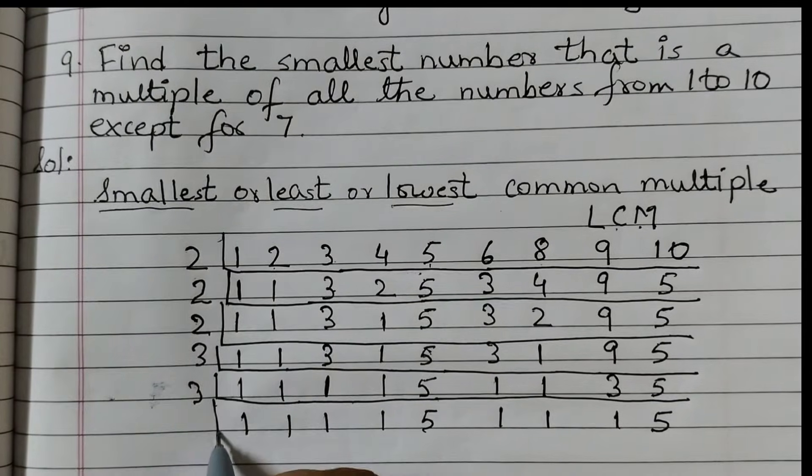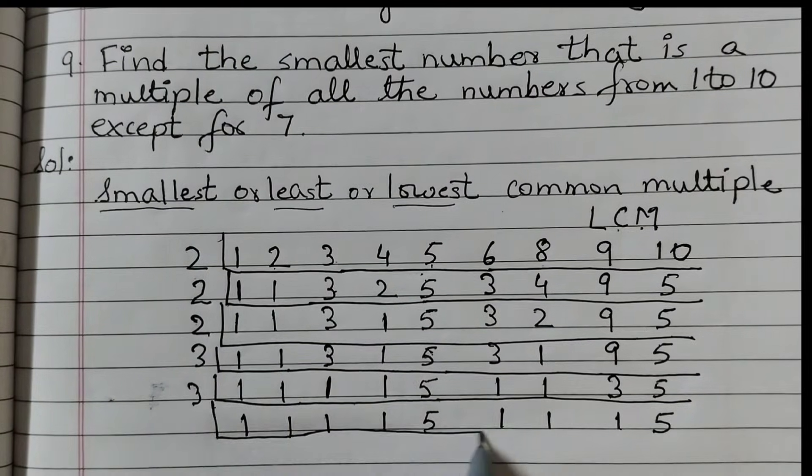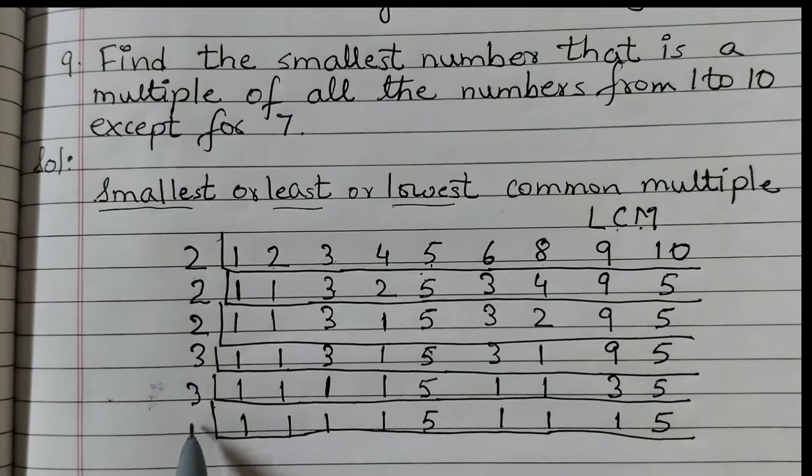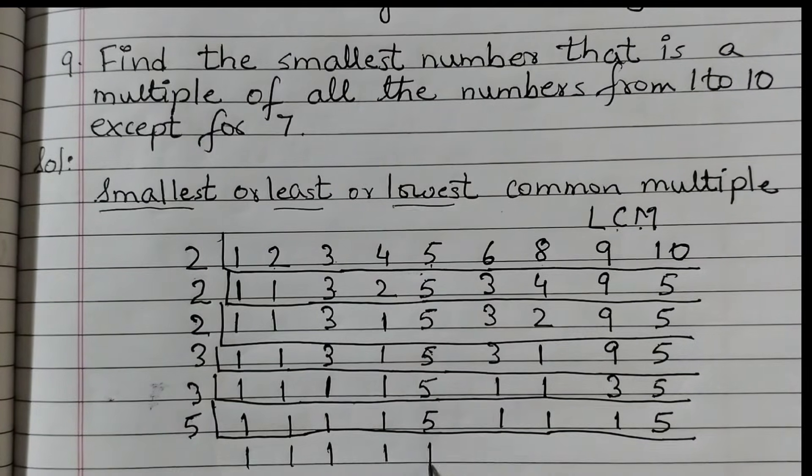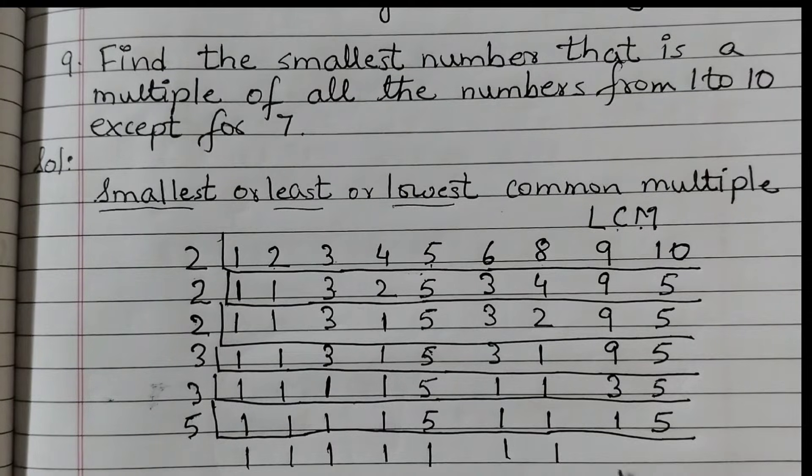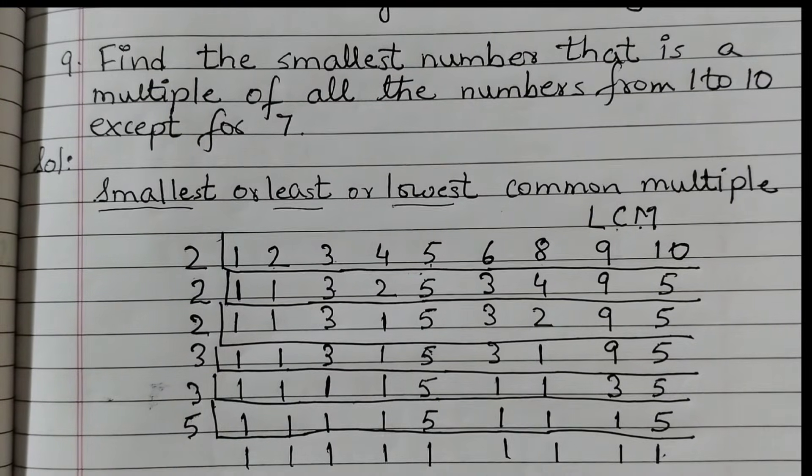5: 1, 1, 1, 1. 5 ones are 5. 1, 1, 1. 5 ones are 5. Now you see here we have got all ones, right? No more numbers left.